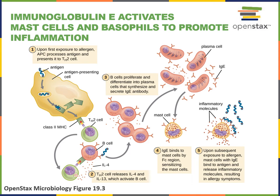IgE activates mast cells and basophils to promote inflammation, and this mechanism can contribute to excessive inflammation producing the symptoms associated with allergies. An allergy is an immune response to an antigen from something like a dust particle or pollen, or some other antigen that is not associated with a pathogen, but is part of the environment that the immune system has recognized as foreign and has started to mount an adaptive immune response against.